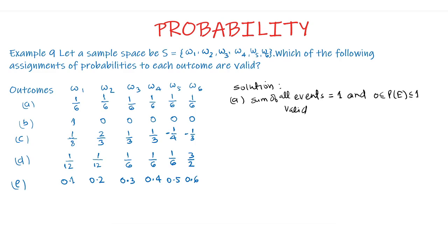For Part B, the sum of the probabilities is again 1 and each outcome's probability lies between 0 and 1, so 0 ≤ P(event) ≤ 1. Therefore, Part B is also valid.